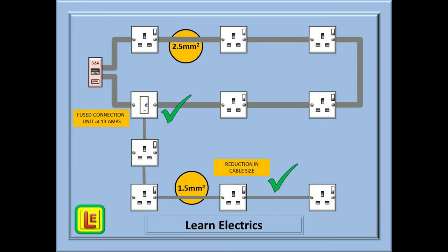Here we have the same ring circuit in 2.5mm twin and earth cable and still protected by the 32 amp breaker. We have replaced a socket with a fused connection unit, sometimes called a fused spur. But we could just as easily have made this FCU a spur and left the socket in situ. This is the important part now. Because the FCU has a 13 amp fuse, we can't exceed 13 amps for everything that follows afterwards.